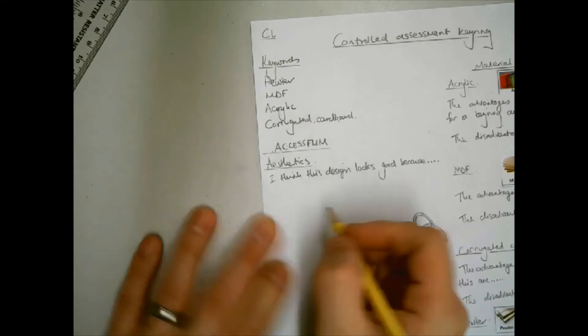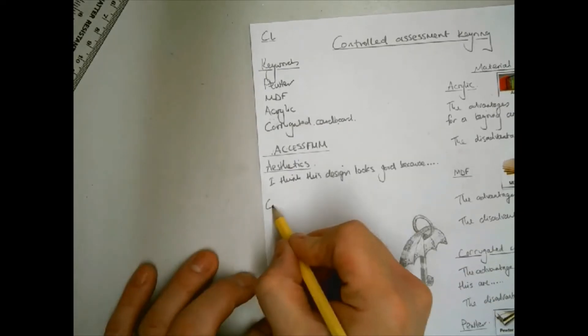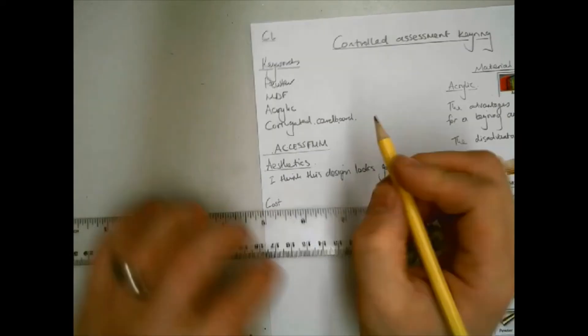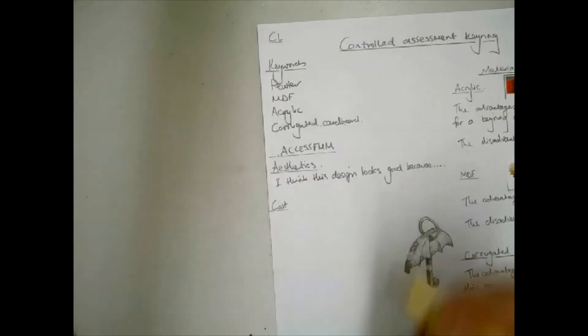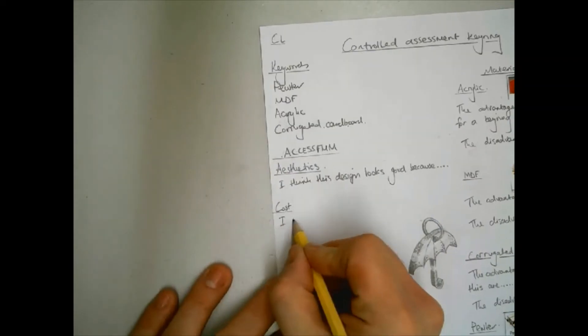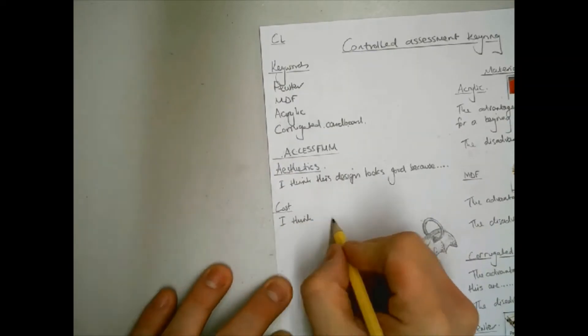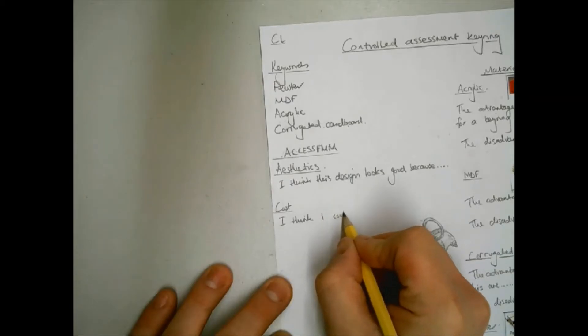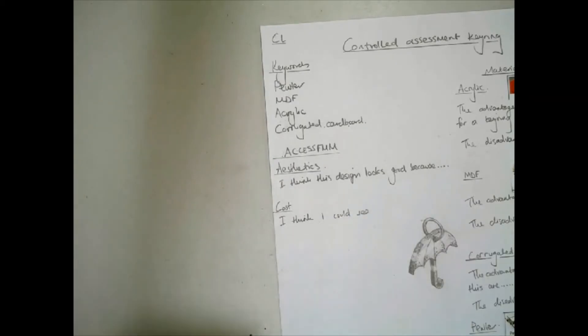The second letter to consider is C. This stands for cost. The things that need to be considered at this stage are how you might keep the cost down when making it so that your design could make more profits, or how much you might sell it for and why.